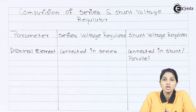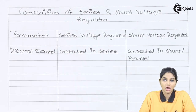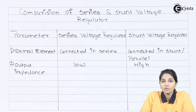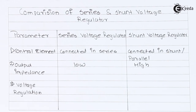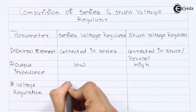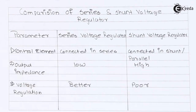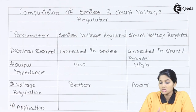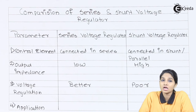The second parameter is output impedance. The output impedance of a series voltage regulator is low, whereas for a shunt voltage regulator it is high. The next important parameter is voltage regulation: series voltage regulators provide better voltage regulation compared to shunt voltage regulators, while shunt voltage regulators provide poor regulation. Regarding application, series voltage regulators are suitable for heavy loads, whereas shunt voltage regulators are suitable for lighter loads.